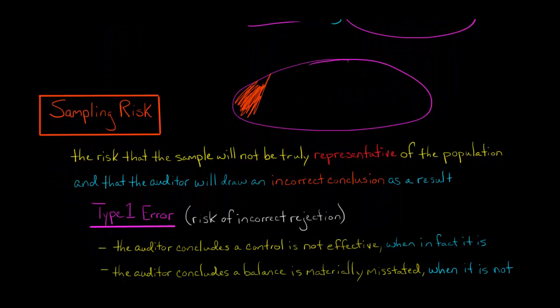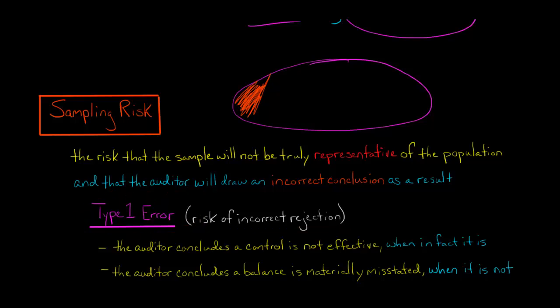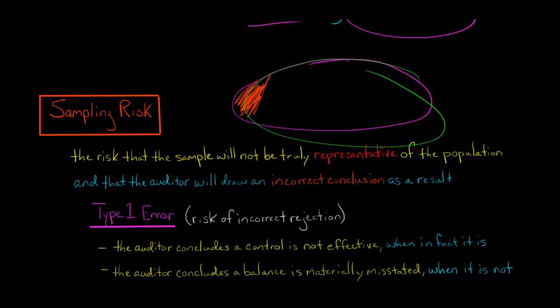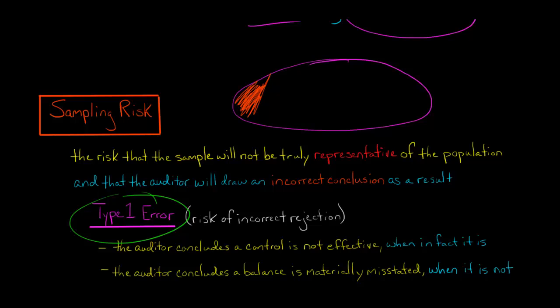There are a couple different types of that. A type 1 error is the risk of incorrect rejection. You look at the sample and say, based on this sample, all the accounts receivable is overstated. But what if it was just this particular sliver that was overstated? In fact, if you were to see the entire population, you would decide that accounts receivable are not overstated. That's an example of a type 1 error.